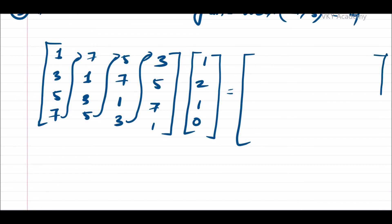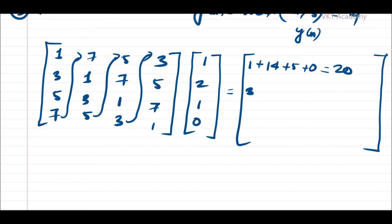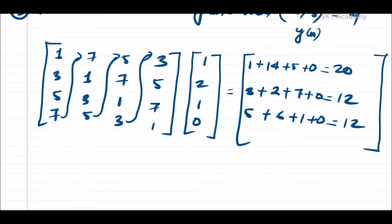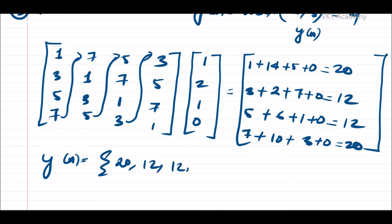The multiplication gives the circularly convoluted result y[n]. First row: 1×1 + 3×2 + 5×1 + 7×0 = 1+6+5+0 = 12... actually: 1+14+5+0 = 20. Second row: 3+2+7+0 = 12. Third row: 5+6+1+0 = 12. Fourth row: 7+10+3+0 = 20. So y[n] = [20, 12, 12, 20], giving four samples in the circularly convoluted result.